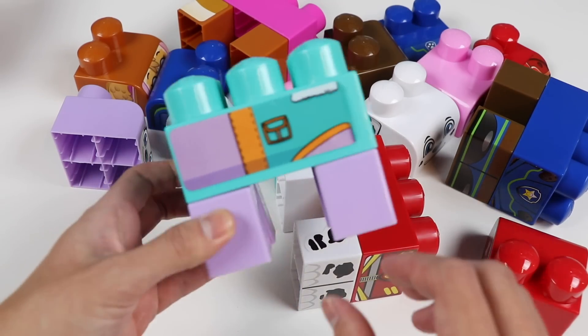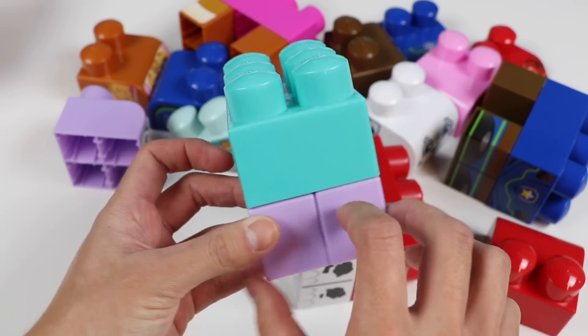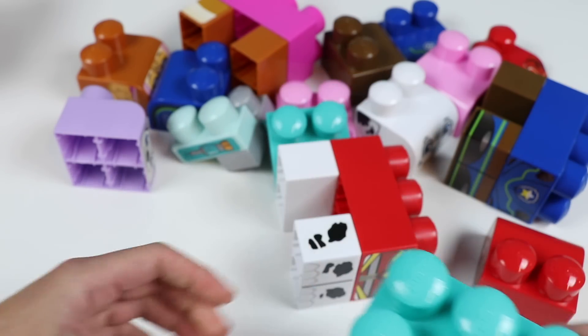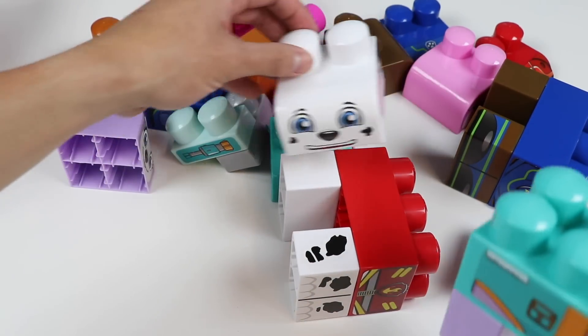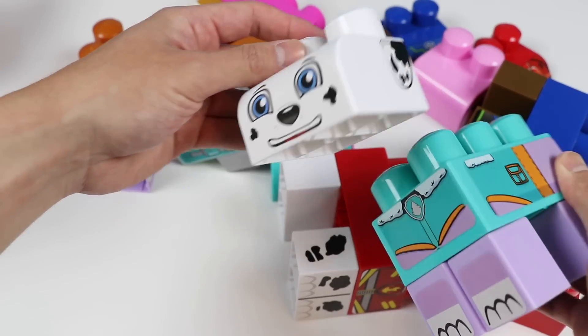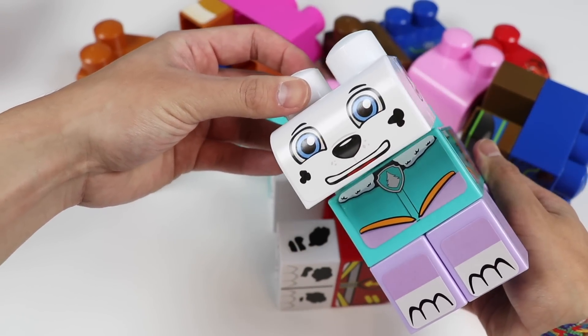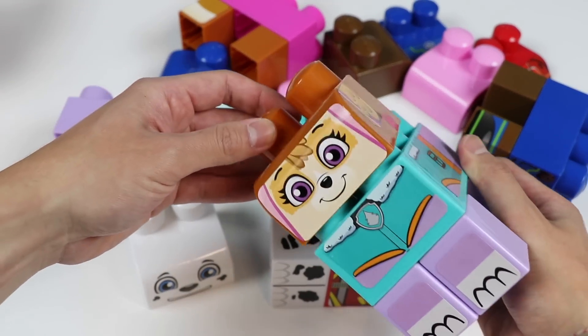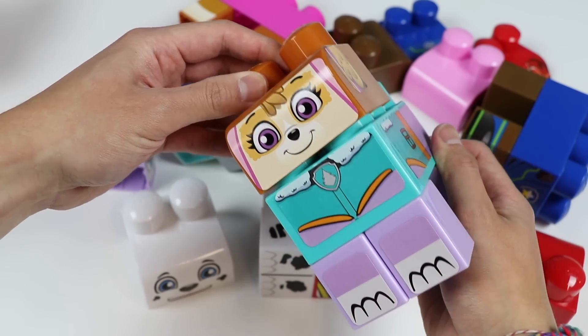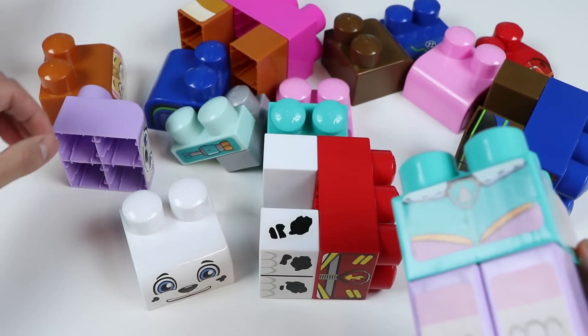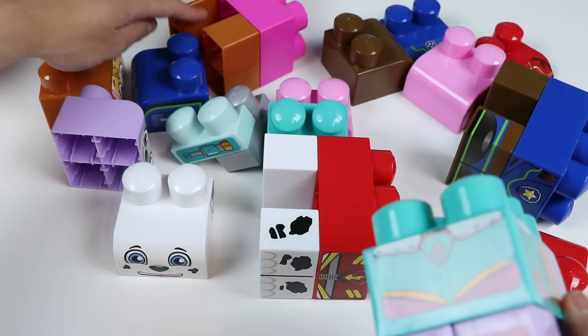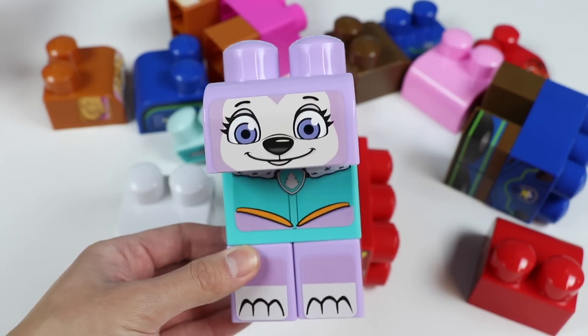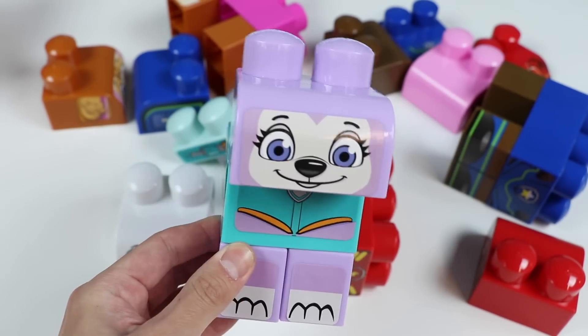Alright, on to the next Paw Patrol pup. Here's a Paw Patrol member's body that has on a teal outfit with purple legs. And the teal outfit is a wool coat. So let's see. Let's start by matching the face again. Is it this one? Looks like it could work, but it's not this one. How about this face? The colors are a bit off. How about this face? We got it! This face matches the leg colors. And look who we have here! It's Everest, the snowy mountain pup!